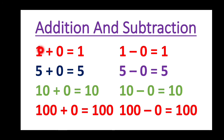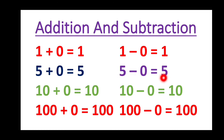See, here is 1 — answer is 1. Here is 5 — answer is 5. Here is 10 — answer is 10. Here is 100 — answer is 100. Here also: 1, answer is 1. Answer is 5, answer is 5. 10, answer is 10. 100, answer is 100. From this, we can understand that if 0 is added to any number or subtracted from any number, we will get that number as the answer.